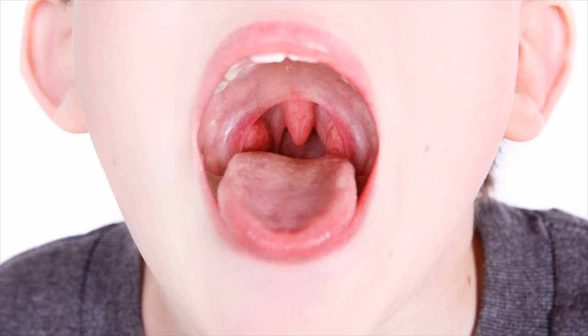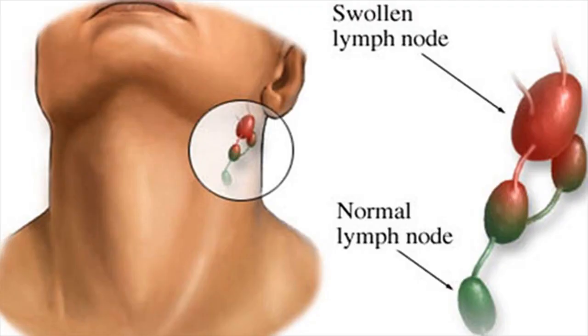What is tonsillitis? Tonsillitis is a condition where your lymph nodes, called tonsils, that are present at the back of your throat are sore and swollen. Although it is a common infection and can occur at any age, tonsillitis is more common among children.